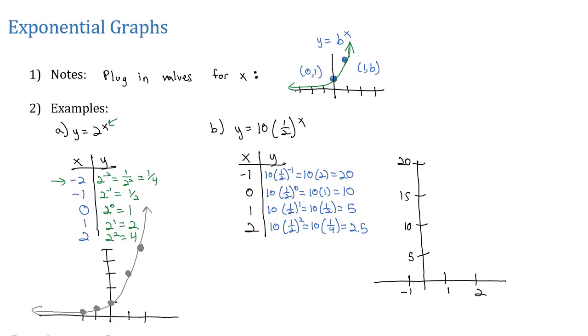So when x was negative 1, the y jumped all the way up to 20. When x was 0, y jumped up to 10. When x was 1, the y jumped up to 5. And when x was 2, we jumped up to 2.5.